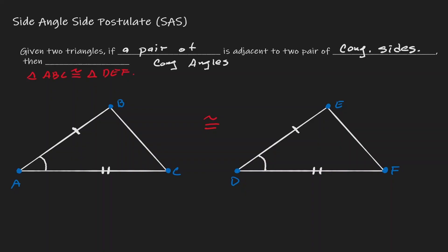So we don't have to check that all sides are congruent and all angles are congruent. When it comes to triangles, if we have a side congruent to a side, then in the middle an angle congruent to another angle, followed by a side congruent to another side — notice the acronym: side-angle-side — then we can conclude that these two triangles are congruent to each other.